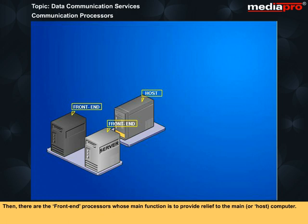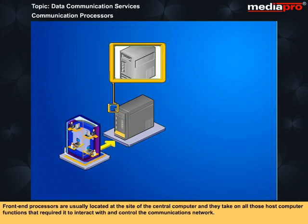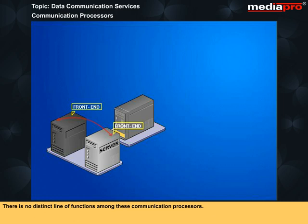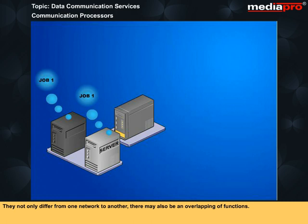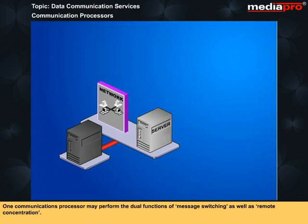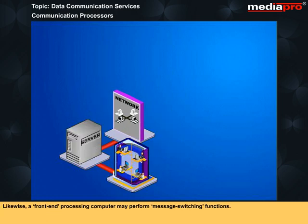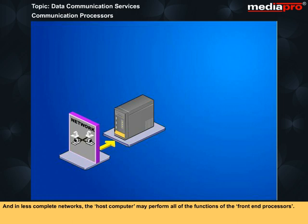Front end processors' main function is to provide relief to the main or host computer. They are usually located at the site of the central computer and take on all those host computer functions that require it to interact with and control the communications network. There is no distinct line of functions among communication processors — they not only differ from one network to another, there may also be an overlapping of functions. One communications processor may perform the dual functions of message switching as well as remote concentration. In less complete networks, the host computer may perform all the functions of the front end processors.